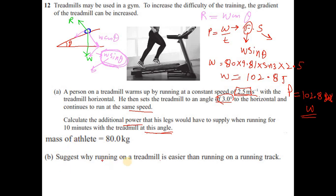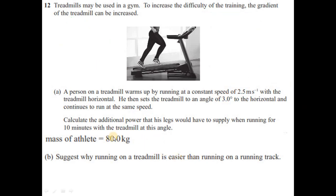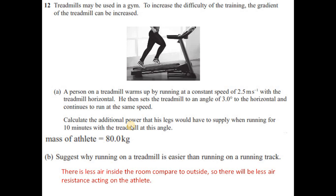Part C: suggest why running on a treadmill is easier than running on a running track. The treadmill is generally used inside a room where there is less air, so less air resistance, making it easier to run. Due to less air resistance, it's easier to run on a treadmill.